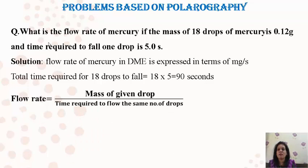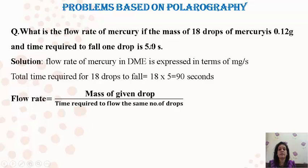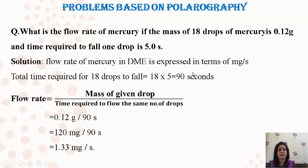Problem 1: What is the flow rate of mercury if the mass of 18 drops of mercury is 0.12 gram and the time required to fall one drop is 5 seconds? Given: 18 drops form in 5 seconds each, so total time for 18 drops = 18 × 5 = 90 seconds. Flow rate = mass / time = 0.12 g / 90 s = 1.33 milligrams per second.